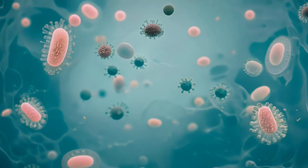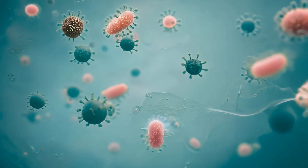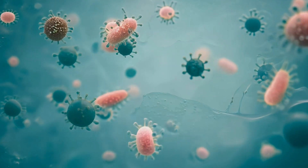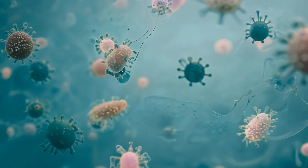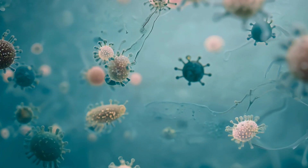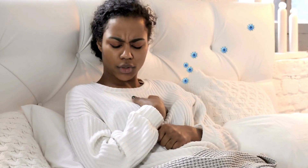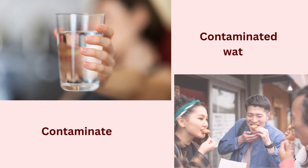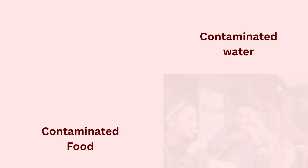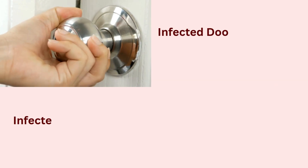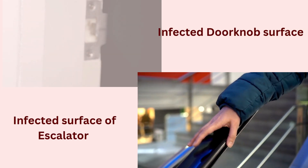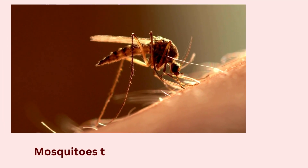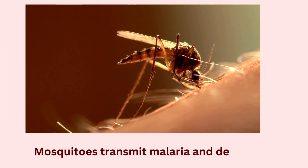The germs are traveling — but how? Infectious diseases spread through the air when we cough or sneeze, through contaminated water or food, by touching infected surfaces, and through insects or animals, like mosquitoes spreading malaria or dengue.